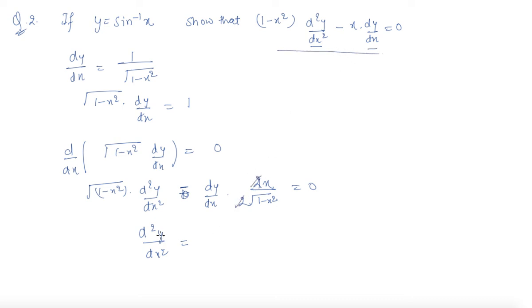If I multiply the equation by root (1 - x²), this is (1 - x²) d²y/dx² minus dy/dx times x equals 0. This is what we need to prove. Hence proved.